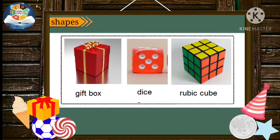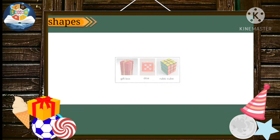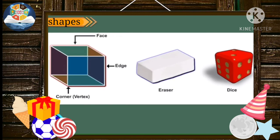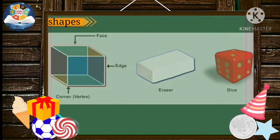In fact, we have another kind of shapes which cannot be drawn on a plain sheet of paper. For example, box, eraser, dice. These are called solid shapes.